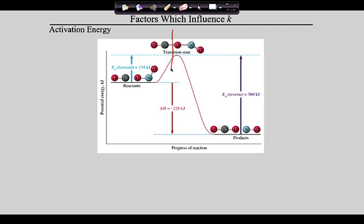They're going to do this to you on the AP test — they love to ask this question. Is this reaction endo or exothermic? This reaction is exothermic. Here's reactants, here's products — which one has more energy? The reactants, meaning the products have less energy, meaning this loses energy. So this is an exothermic process. Now what if this reaction does this instead: reactants, activated complex, products — but now the products are higher than the reactants. Now is the reaction endo or exothermic? Endothermic.